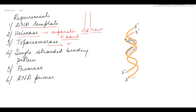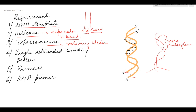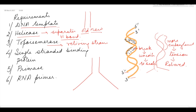Topoisomerase helps in relieving strains. DNA is a double-stranded helical structure — the two strands are like a spring entangled into each other. When we try to separate the strands, more entanglements appear at the upper part. These tensions are relieved by topoisomerase. It creates a nick — a break — in one strand, uncoils it, and then reseals it so that the Y-shaped replication fork can be formed.